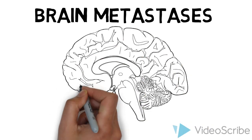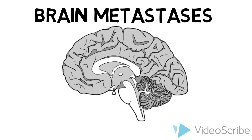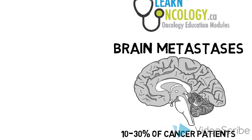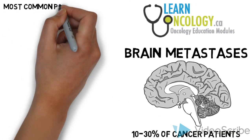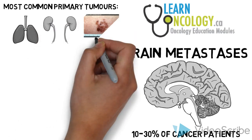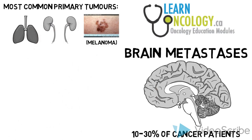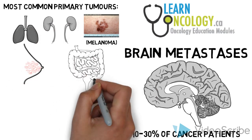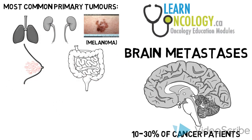Brain metastases occur in 10-30% of cancer patients. They are most common in patients with lung cancer, renal cell carcinoma, melanoma, breast cancer, and colorectal cancer.